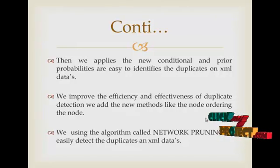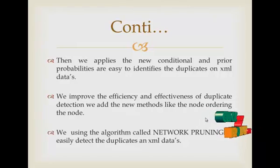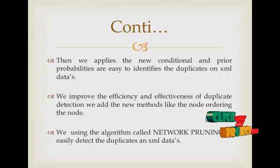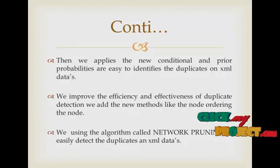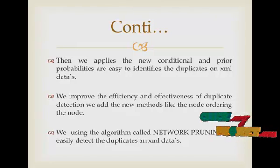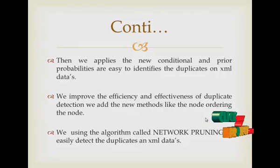We add a new method for node ordering. In this method, a probability condition is applied to remove unwanted data, then duplicate detection is performed for normal and high data. We use an algorithm called network programming to easily detect duplicates in the XML data, and after duplicate detection the information is retrieved and the XML data set is cleaned.